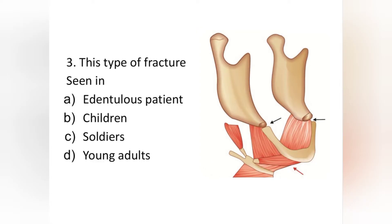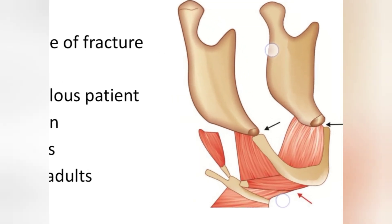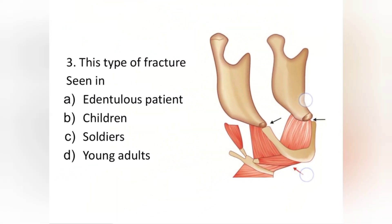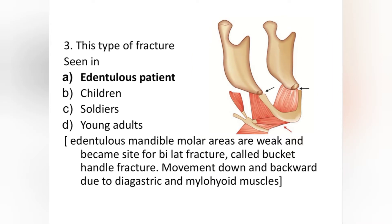Next question — you can see a picture here. This type of fracture is seen in which patient? Option A: Edentulous patient. Option B: Children. Option C: Soldiers. Option D: Young adults. You can see bilateral fracture in the molar area. The answer is edentulous patients — the molar areas are weak in the edentulous mandible and become a site for bilateral fracture.